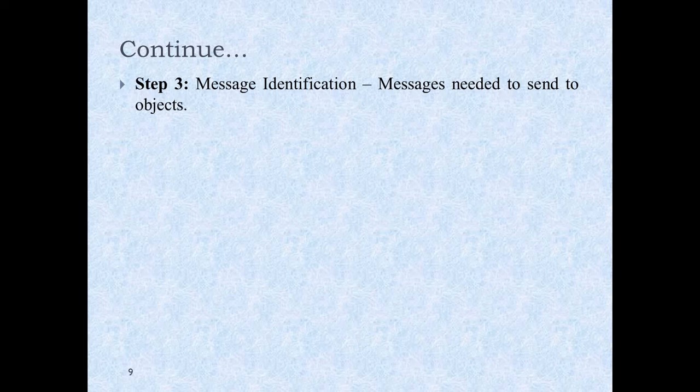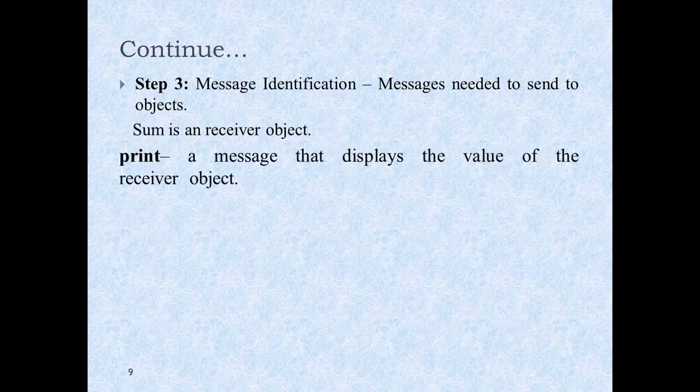Step three is message identification — the messages needed to send to objects. The message identification means that sum will be a receiver object, which means the two numbers will be added up. Then it will display the result using a print function.